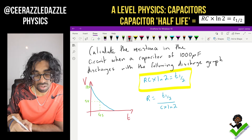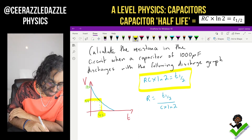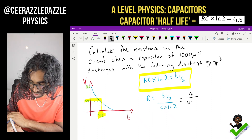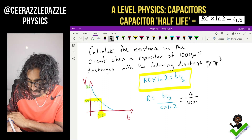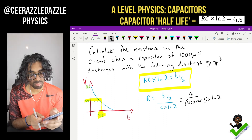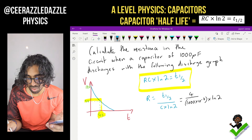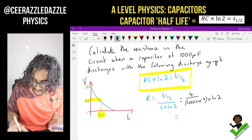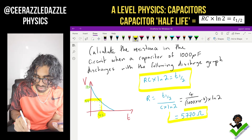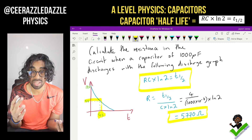From the graph, we can see the half-life is 4 seconds. So R equals 4 divided by 1000 microfarads, which is 1000 times 10 to the minus 6 farads, times ln(2). Taking out the calculator: 4 divided by (1000 × 10⁻⁶ × ln 2) gives us a resistance of 5770 ohms. That's an example of using the formula — RC times ln(2) equals t½ — to quickly solve problems when we have the decay graph.